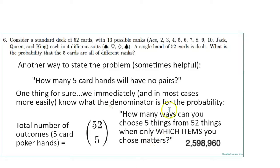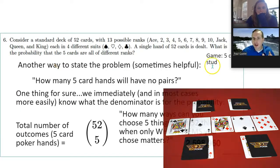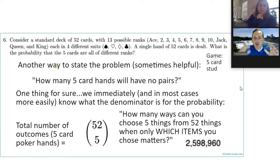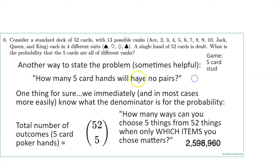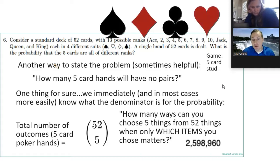The game here is five card stud — you don't draw, somebody deals you five cards and you stay with those five cards. Relating what you're doing to the situation helps crystallize it. Another way to state the problem: how many five-card hands from a 52-card deck will have no pairs? Suit combinations don't matter here — we just want no pairs.